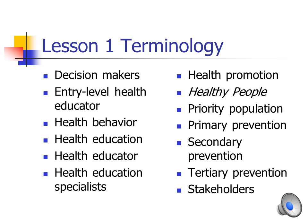Here's some of the terminology in the chapter, and you can use this as a way of studying for the quizzes. Terminology like decision makers, health behavior, health education, health educator, health education specialist, health promotion, the different levels of prevention — primary, secondary, and tertiary prevention — priority population, and stakeholders are all things we want to make sure we understand once we're finished with the lesson.